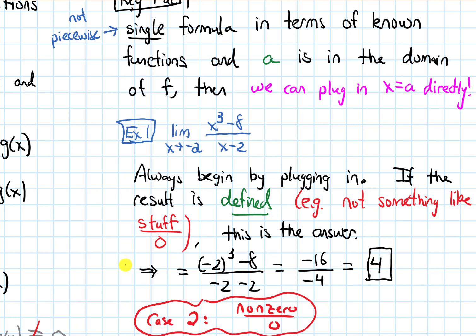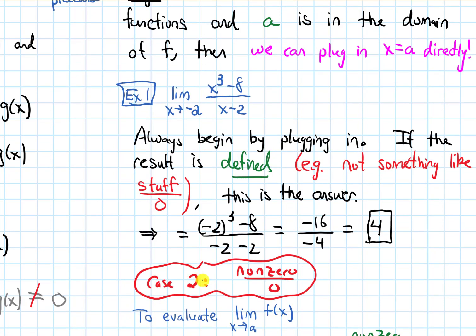In the next video, we will look at case 2: when we plug in, what do we do if we get something of the form non-zero number on top and 0 on the bottom?